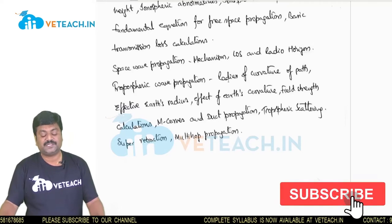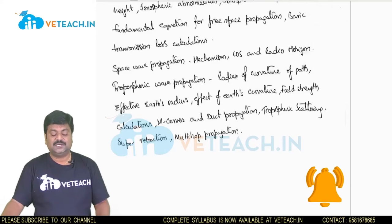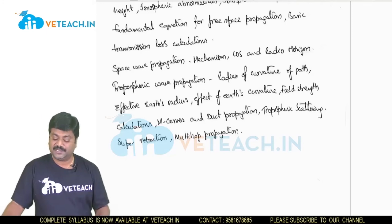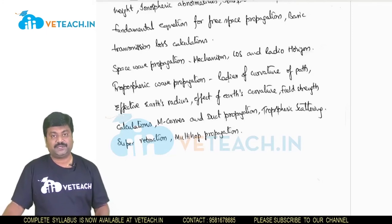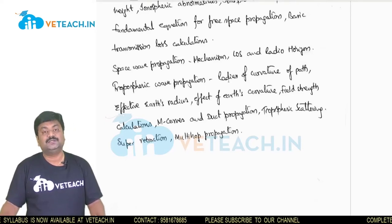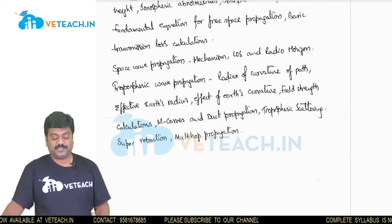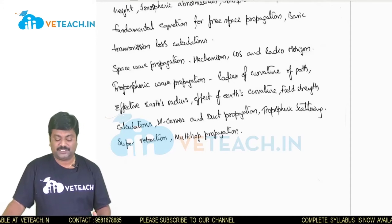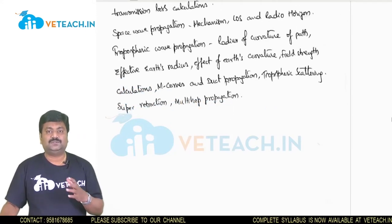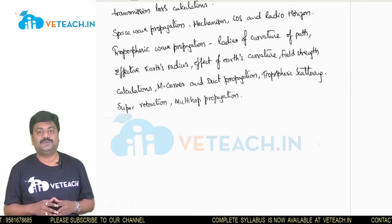We will be studying ionospheric abnormalities and how absorption happens in ionospheric layers, and calculating the fundamental equation of free space as well as basic transmission loss. Moving on to space wave propagation, we will study the mechanism, line of sight propagation, define radio horizon, and study troposcatter wave propagation, including radius of curvature of the path, effective earth radius, field strength calculations, the importance of M curves, troposcatter propagation, duct propagation, and multi-hop propagation.